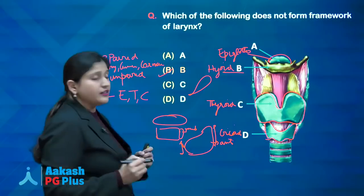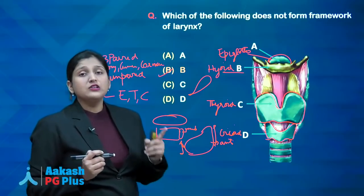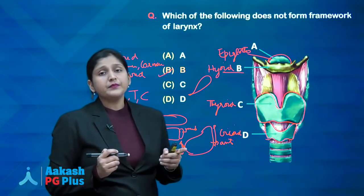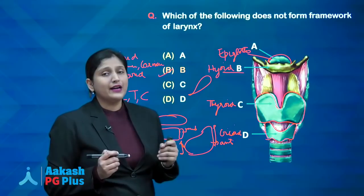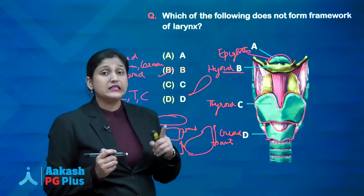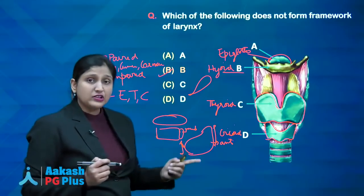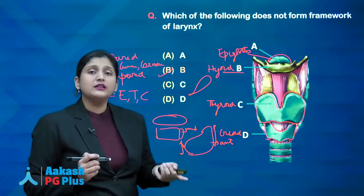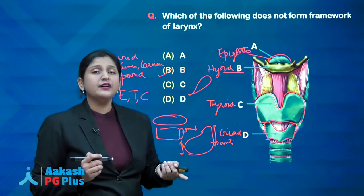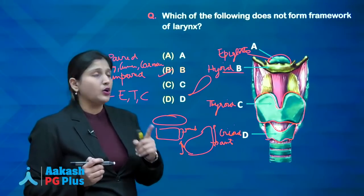Another frequently asked question from the larynx: which is the narrowest part of an adult larynx? The answer is glottis. And which is the narrowest part in children? The answer is subglottis.